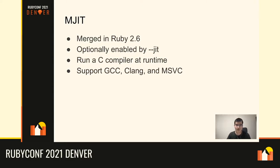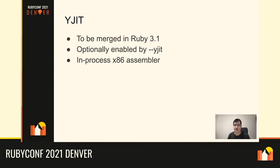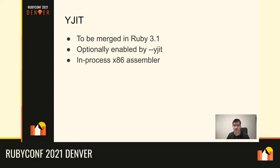These days, Shopify is developing another JIT compiler called YJIT, currently discussed to be merged in Ruby 3.1 — when you watch this recording it might already be merged. It's also planned to be optionally enabled via --yjit. Unlike MJIT, it uses an in-process x86 assembler, so you don't need a separate C compiler process. YJIT also has a quicker warm-up because of its faster JIT compilation performance.